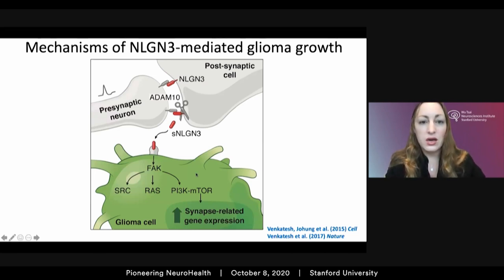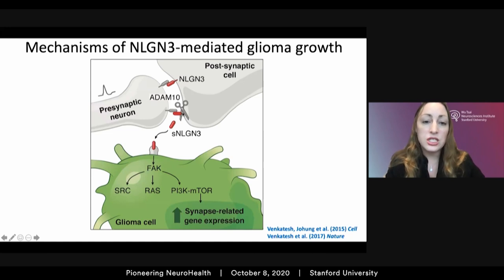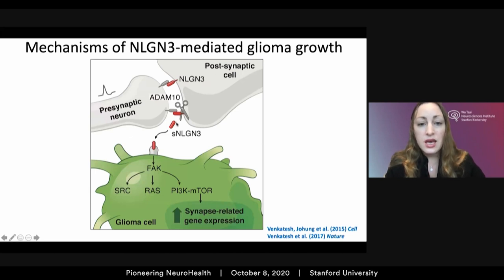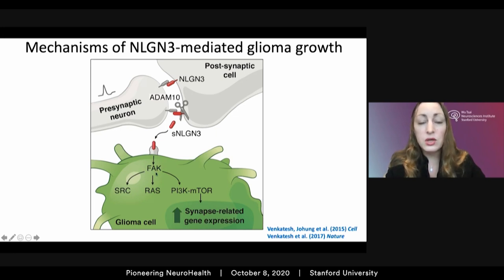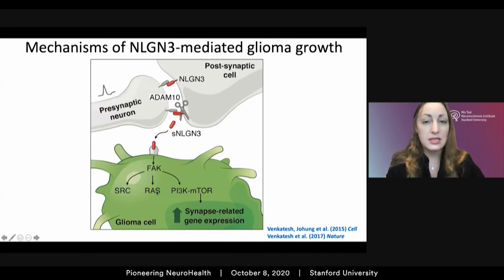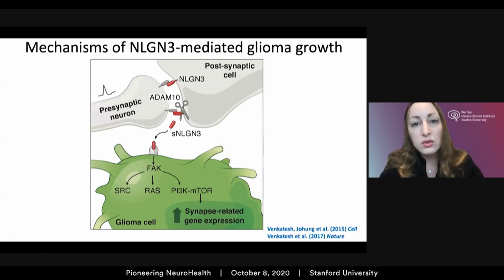Why is Neuroligin-3 such an important mechanism for glioma? Neuronal activity results in the release of ADAM10 — thought to be released in synaptic vesicles — which mediates the cleavage and shedding of the N-terminal ectodomain of Neuroligin-3 on the postsynaptic side of synapses, both axon-glial and neuron-to-neuron synapses. This shed Neuroligin-3 then binds to a binding partner we're working to identify, and after binding there is rapid stimulation of multiple oncogenic signaling pathways — early and robust stimulation of the focal adhesion kinase pathway, then downstream PI3-kinase, mTOR, RAS, and SRC pathways.